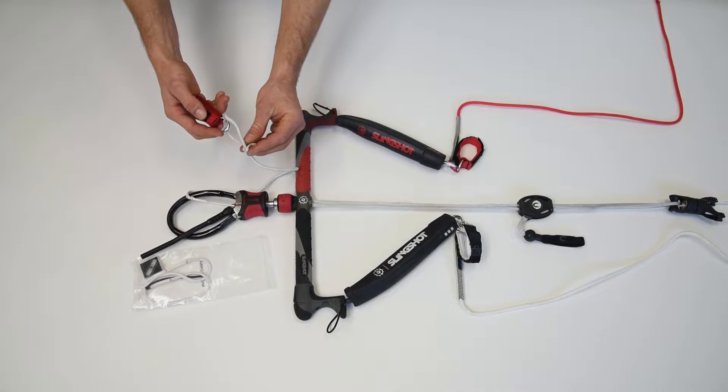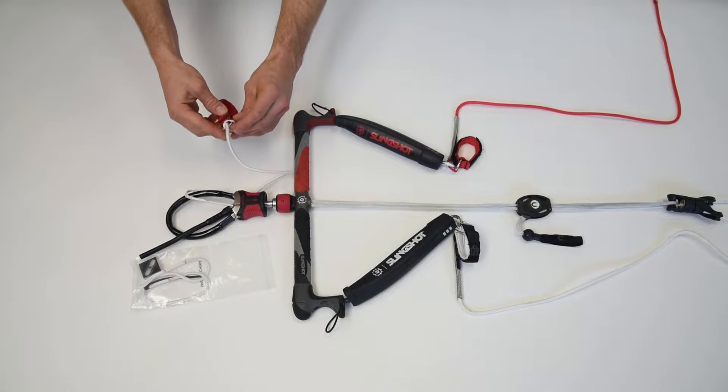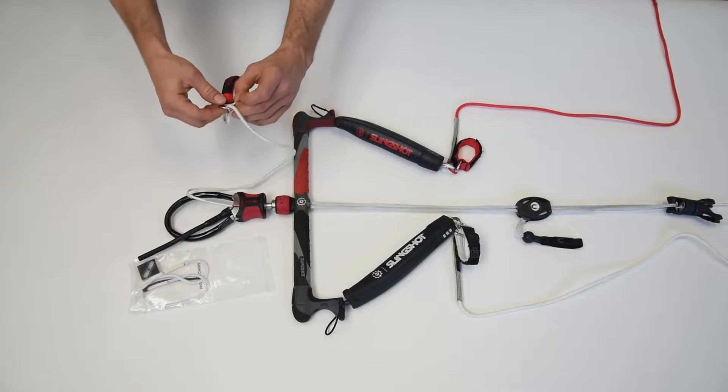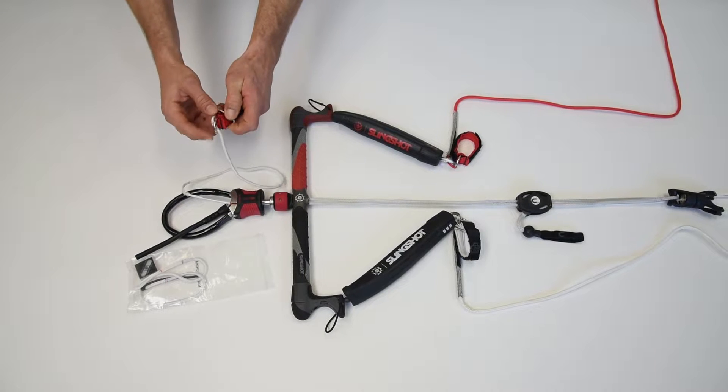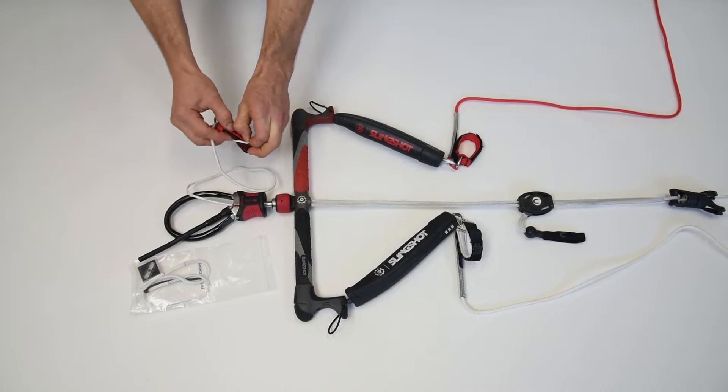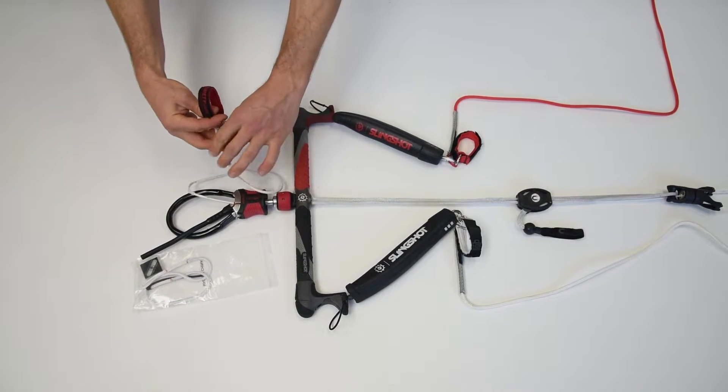The first step is to pull the CSS line through the bar and safety system as shown here. Next you will need to remove the CSS bungee from the metal ring attached to the red safety loop. Simply loosen the loop at the end of the bungee and slide the red webbing through.